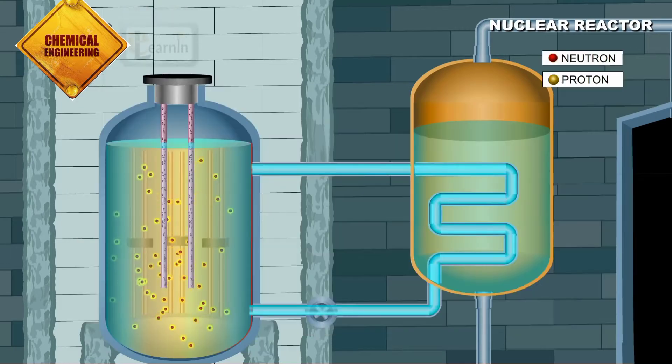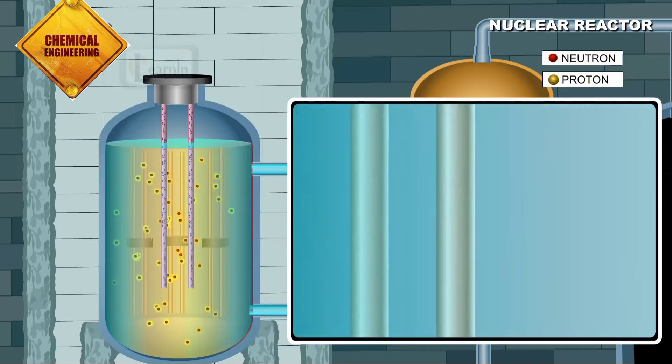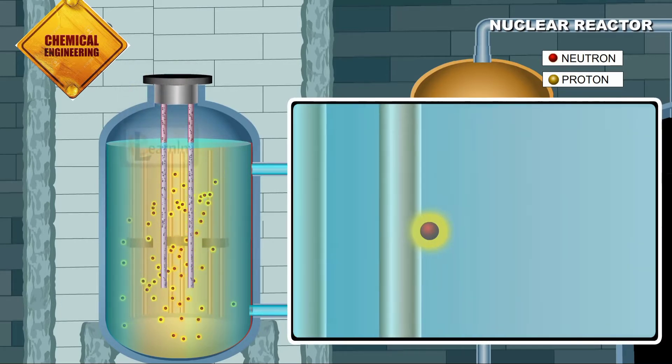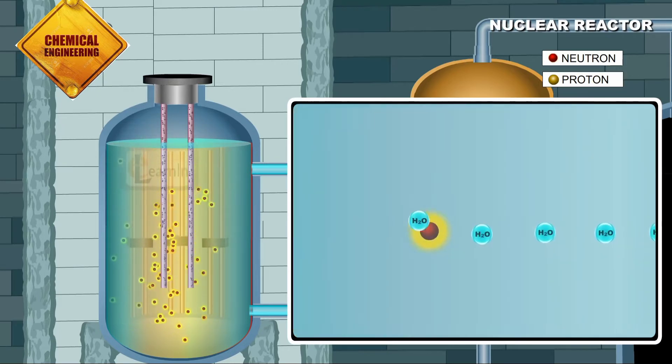Water molecules in the moderator are useful in slowing down the high energy neutrons which leave the fuel element after nuclear fission. These high energy neutrons collide with water molecules thereby losing out on some energy with every collision and therefore slowing down substantially.